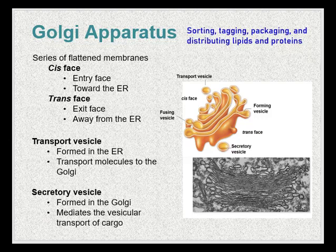Vesicles can bud from the ER and transport contents to elsewhere. But before reaching their final destination, the lipids or proteins within transport vesicles still need to be sorted, packaged, and tagged so they end up in the right place. Sorting, tagging, packaging, and distributing lipids and proteins is the job of the Golgi apparatus. The Golgi can be thought of as like the cell's post office or shipping center — it doesn't create the packages that need to be shipped, but makes sure they're packaged correctly and end up in the right spot.